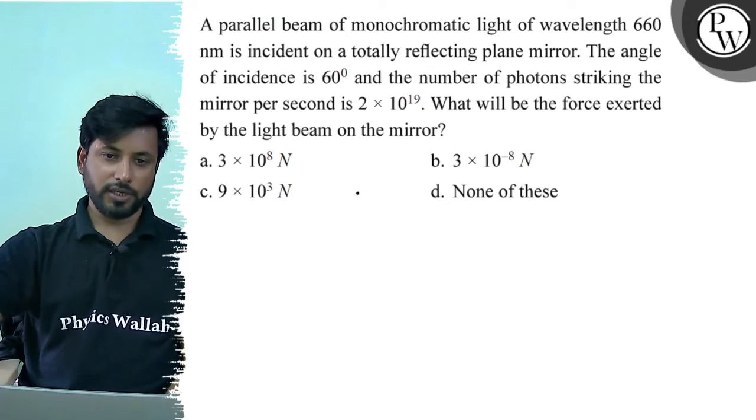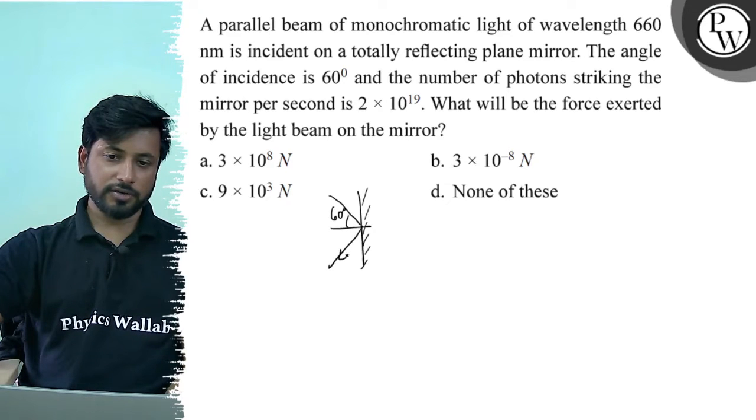Option D: None of these. So, this is a totally reflecting surface and this is a light beam. The angle is 60 degrees. The incident ray is reflected at the same angle.